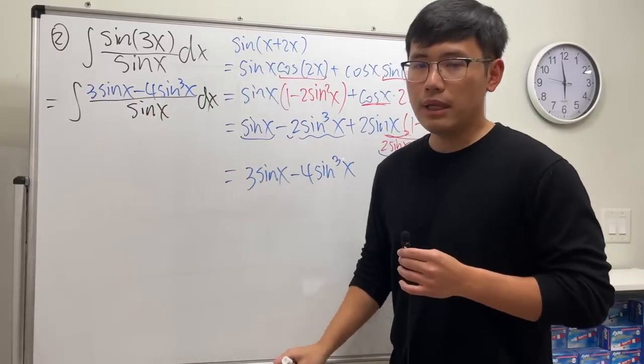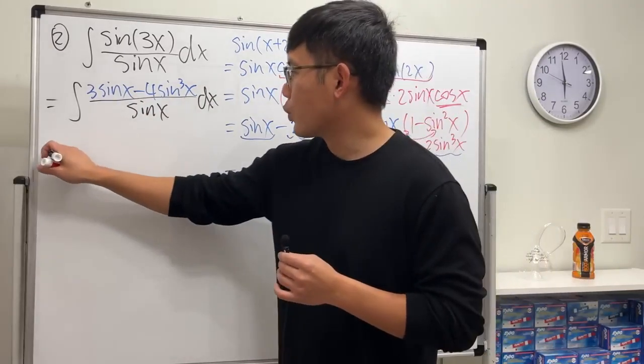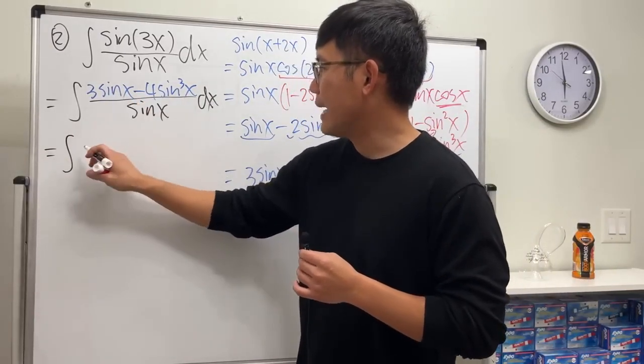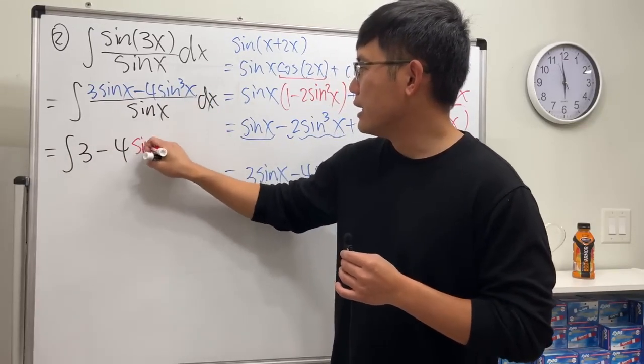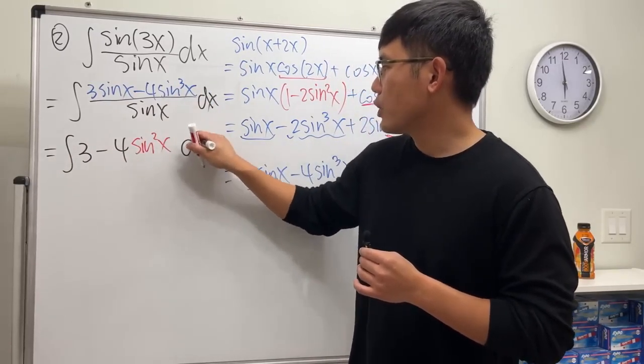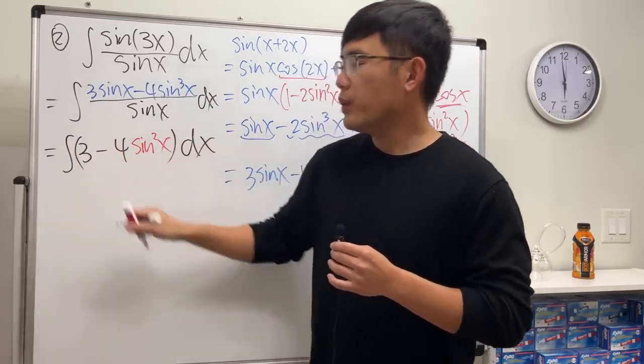And we have the dx right here. Now we can cancel things out and then focus on integration. So right here we will get this over that is just 3, and this over that is minus 4, and then we will just get sine squared x.